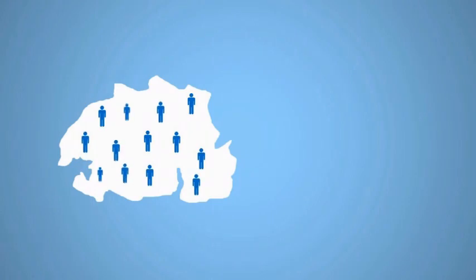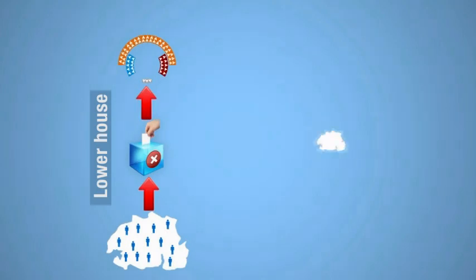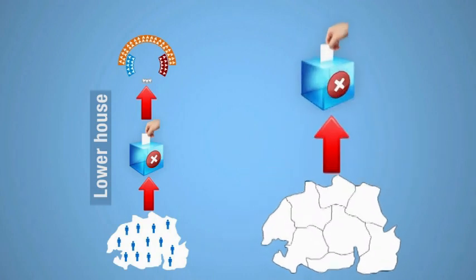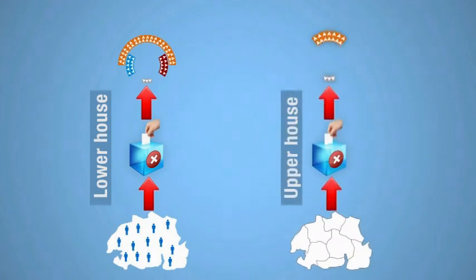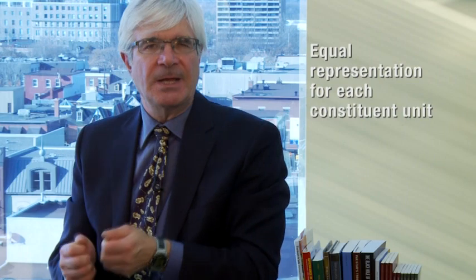The central governments of almost all federal countries have upper and lower houses of parliament. The lower house represents the people throughout the country on an equal basis, while the upper house is usually designed to represent the states or provinces — the constituent units — and give them representation at the center of the country. Frequently, there is equal representation for each constituent unit in the upper house. In the United States Senate, for example, there are two senators for each of the 50 states, even though the largest state, California, is more than a hundred times greater in population than the smallest state.